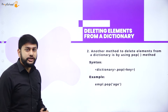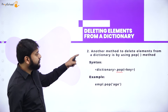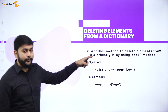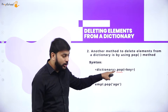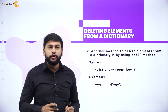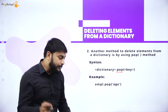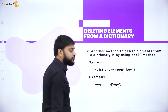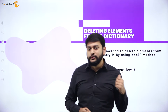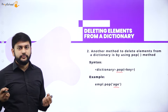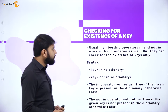The second method to delete an element is using the pop() method. The syntax is: dictionary_name.pop(key). 'pop' is a predefined function. Within the parentheses you mention the key, and that key-value pair will be removed. You can use whichever method you feel comfortable with — either 'del' or 'pop'.